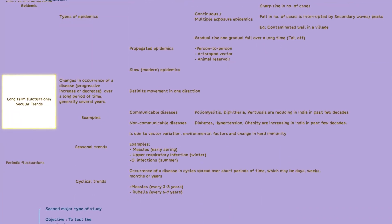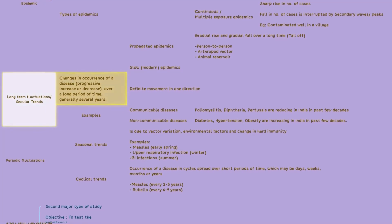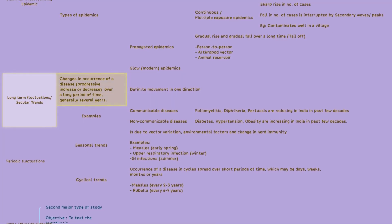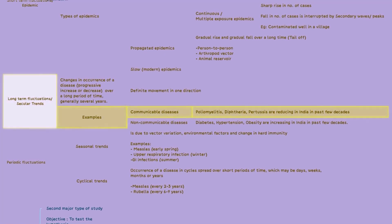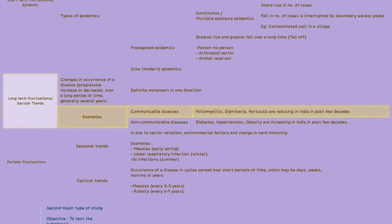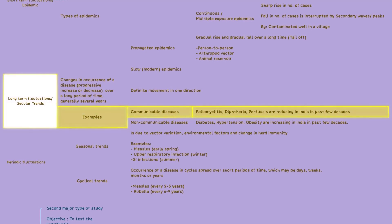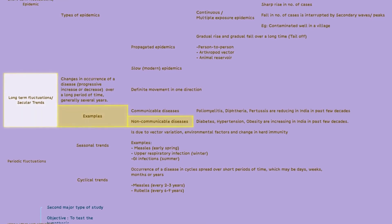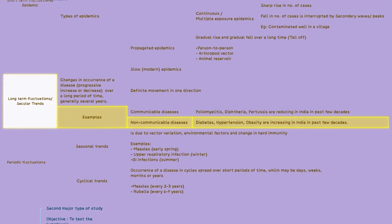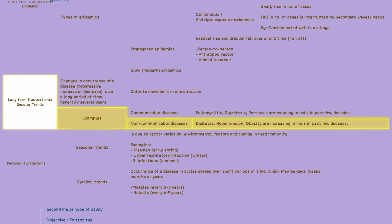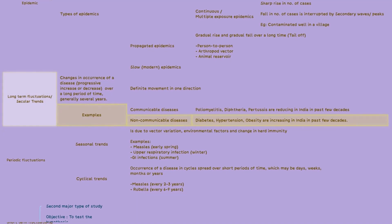Secular trends, or long-term fluctuations, can be seen in disease occurrence over several years. For communicable diseases such as poliomyelitis, diphtheria, and pertussis, a decreasing trend has been observed in India over the past few decades. Conversely, non-communicable diseases like diabetes, hypertension, and obesity have shown an increasing trend during the same period.